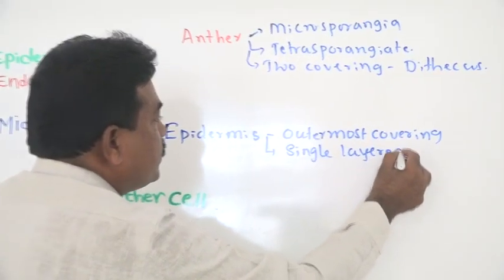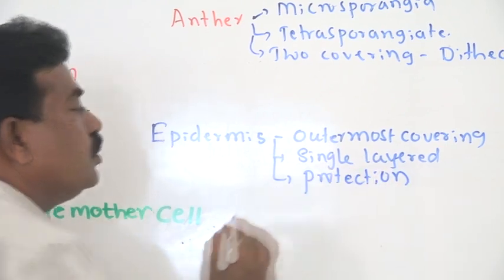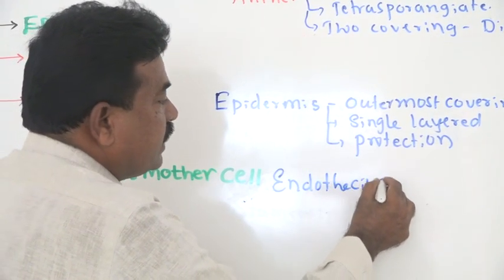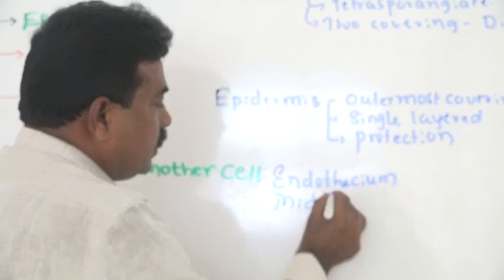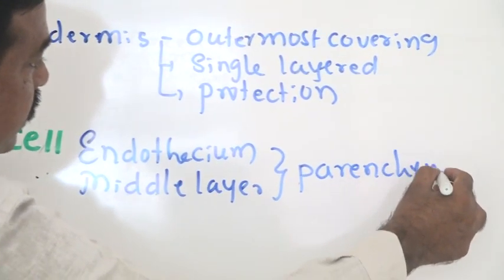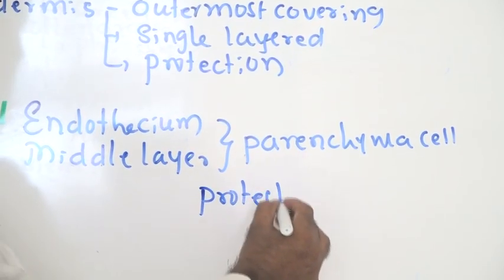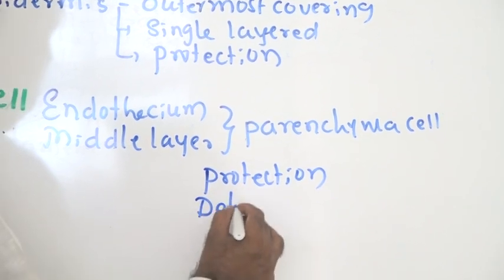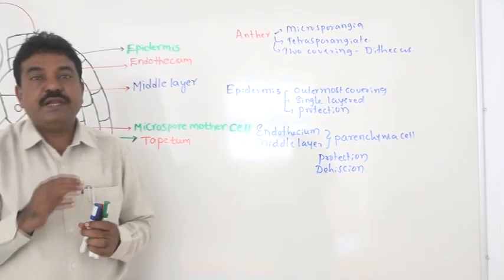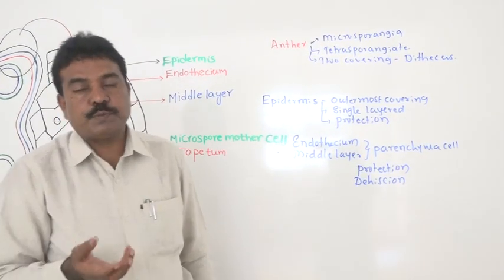The role of the epidermis is protection. The endothecium and the middle layer are composed of parenchyma cells, and these parenchyma cells generally play a very important role in protection. They also play a very important role in dehiscence. Dehiscence means breaking in a definite direction.